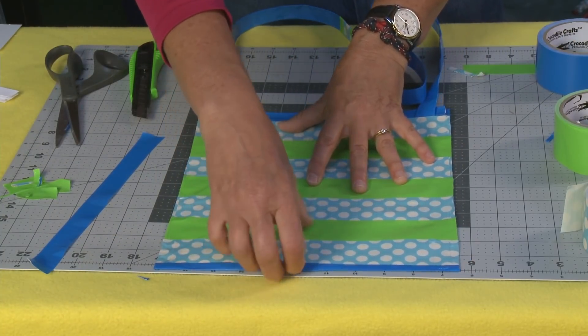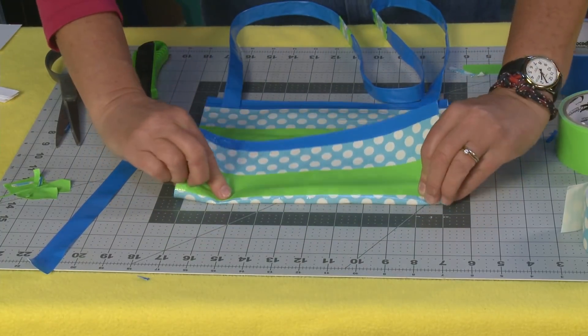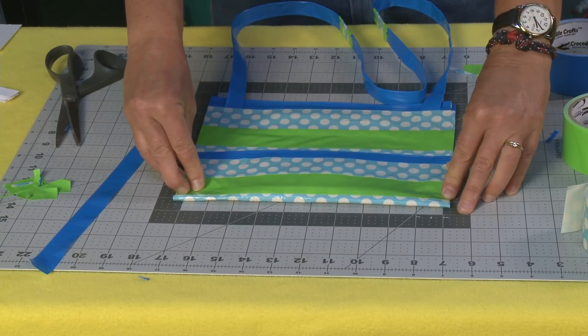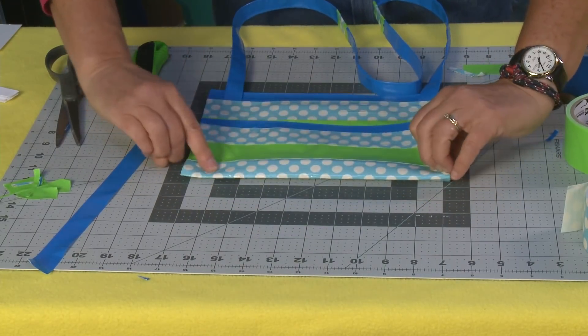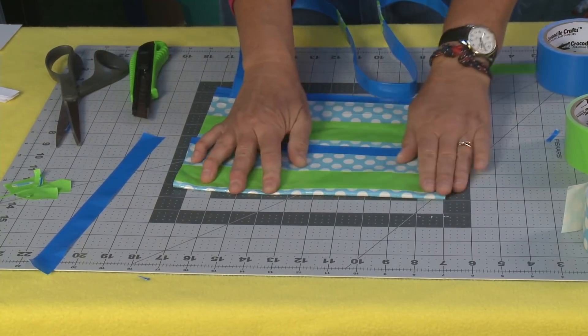But this one I'm going to be making a pocket for. So what I'm going to do is fold this up where I think that's like a nice pocket. I could make it bigger if I wanted to, but I'm going to fold it up about one third of the way up.